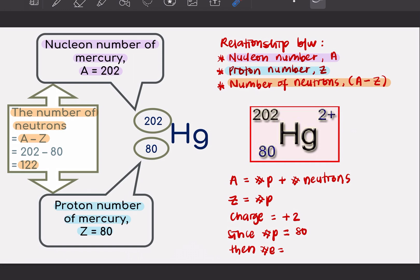So, since it has a plus 2 charge, mercury 2 plus, that means that you have more number of protons than number of electrons. Your number of protons is fixed for your element. It will not change.